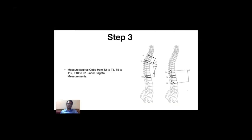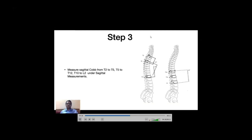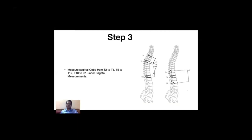The third step is to assess the sagittal profile. For the proximal thoracic curve, we measure the T2-T5 Cobb angle — if more than 20 degrees, it is structural. For other curves, we measure the T10-L2 Cobb angle — if more than 20 degrees, it is structural. For the sagittal modifier, we measure the Cobb angle between the T5 superior end plate and T12 inferior end plate. If this angle is less than 10 degrees, it is considered hypokyphosis, denoted by a minus sign.